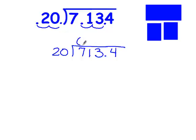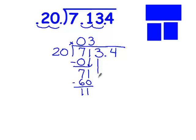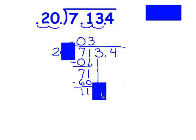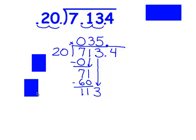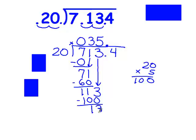I can't get any groups of 20 out of 7. 0 times 20 is 0. I have 7 left over, and down comes my 1. I can get 3 groups of 20 out of 71. 3 times 20 is 60. I have 11 left over, down comes my 3. I'm going to use these covers — cover this one here and cover this one here to help me. I can easily see that I can get 5 groups of 2 out of 11, so I'm going to put a 5 there. I'm going to move the covers and multiply. 20 times 5 is 100. When I subtract, I have 13 left over, and down comes my 4.